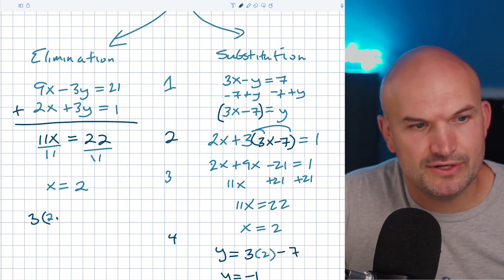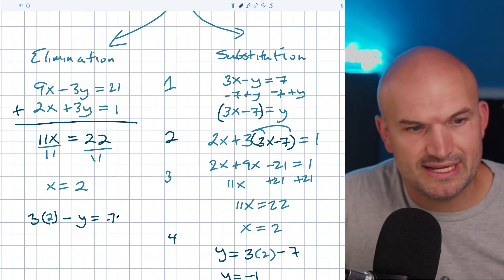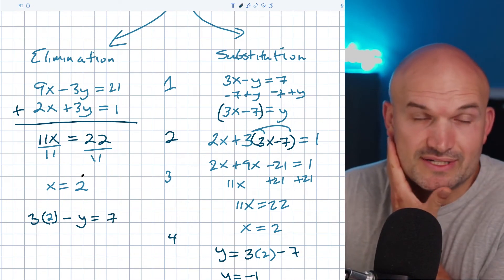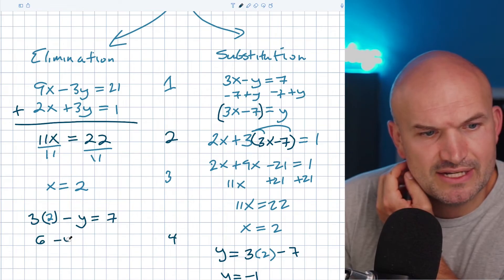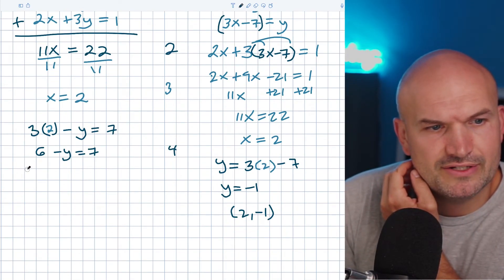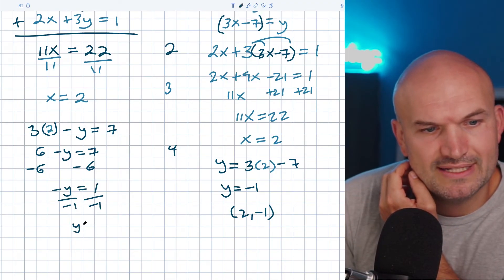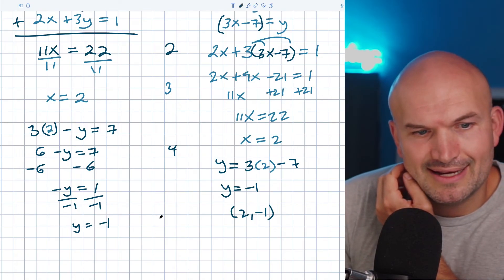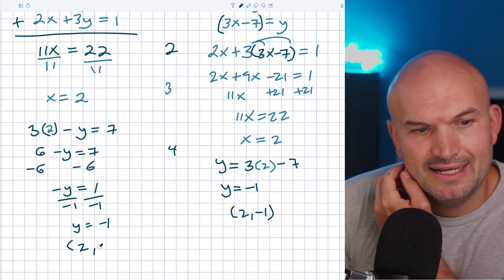To verify using elimination, plug x equals 2 into the original equation 3x minus y equals 7: 3 times 2 minus y equals 7, so 6 minus y equals 7. Subtract 6 from both sides: negative y equals 1, so y equals negative 1. We get the exact same answer: (2, negative 1).